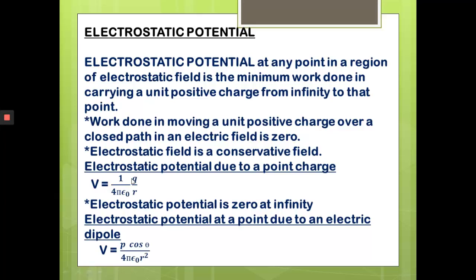If we consider a point at infinity, the electrostatic potential will be zero because 1 divided by infinity equals 0. For the electrostatic potential at a point due to an electric dipole — a dipole being two equal and opposite charges separated by a distance — the formula is: V equals P cos θ divided by 4πε₀ R².